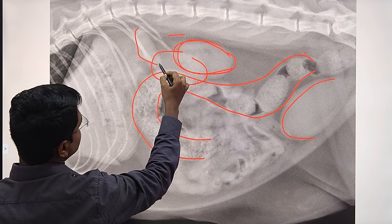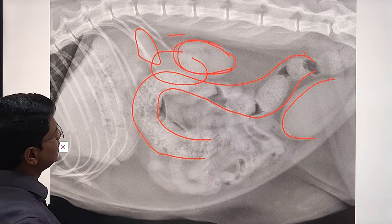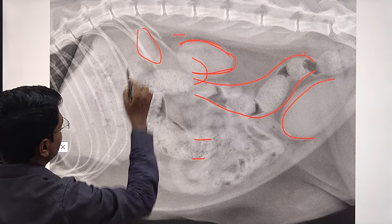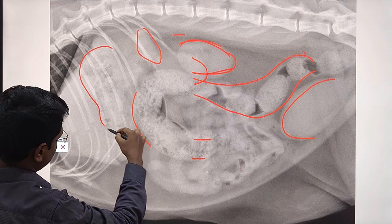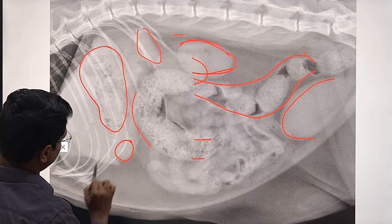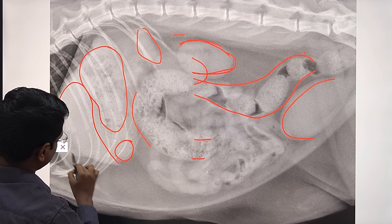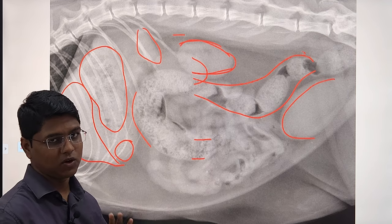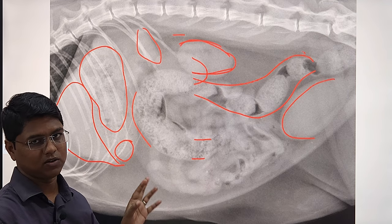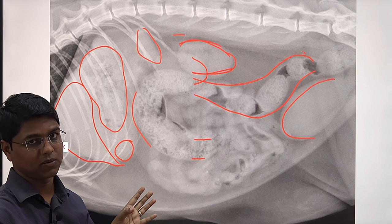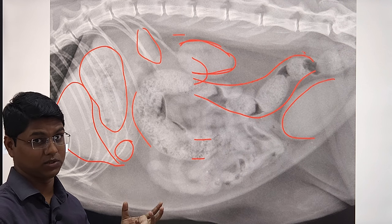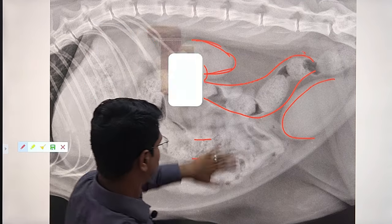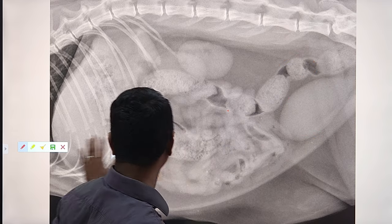Here can you see a triangular piece? That structure is nothing but the spleen — this is the head of the spleen. And here is the stomach. This small one is the pylorus. This is the liver. In case of cat, the tail of the spleen is not usually visualized on the normal survey radiograph. If it is at all visualized, then there is some pathology. We will discuss the spleen also.